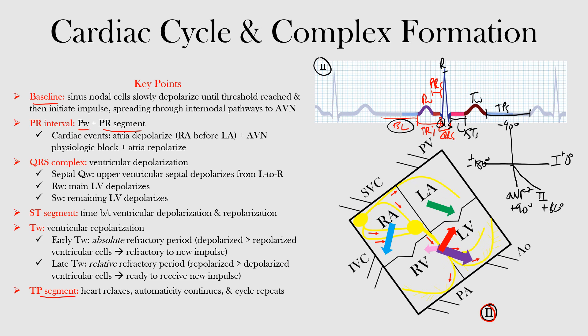Now we'll go through each aspect of the cardiac complex and see how it relates to the underlying electrical activity of the heart. The baseline is where most of the cardiac muscle is at rest. As we get to this portion, the sinus nodal cells are slowly depolarizing until they reach threshold and then initiate an impulse. This is our sinus node right there in the right atrium. It then spreads through the internodal pathways to our AV node.